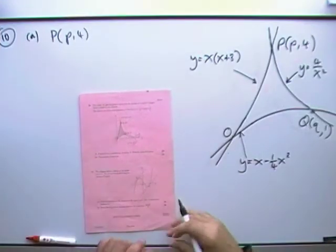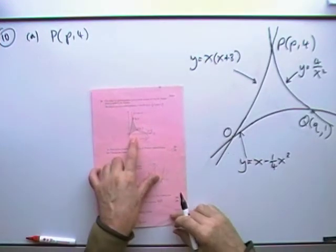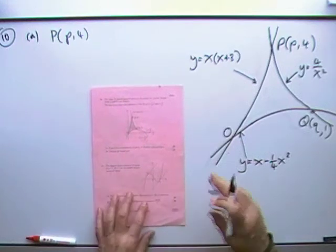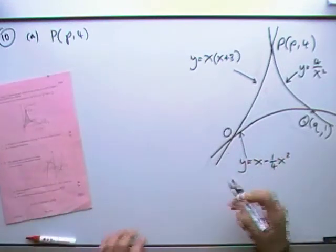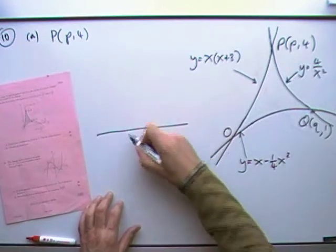Number 10 from the 1999 paper 2, an area between curves. Although all areas are areas between curves, after all, it doesn't matter even if you've got a curve with the x-axis.